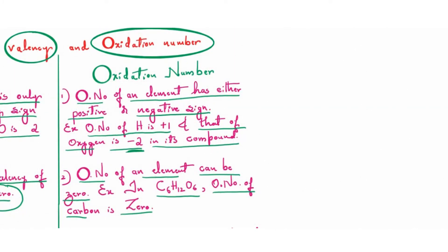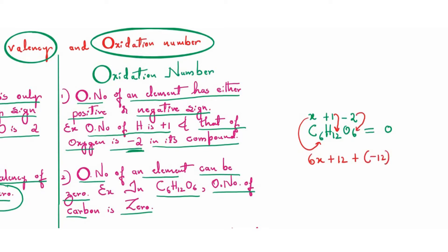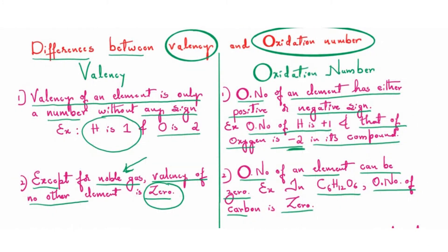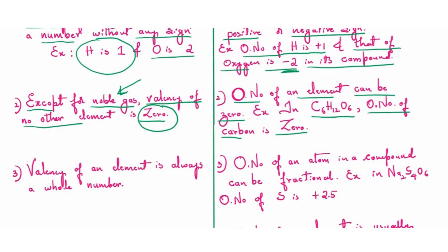I will write C₆H₁₂O₆ equated to zero. We know that oxygen is minus two and hydrogen is plus one. I will calculate carbon as x. So: x×6 gives 6x, plus 1×12 gives +12, and minus 2×6 gives −12, all equal to zero. Now 6x = 12 − 12, so x = 0/6 = 0. Therefore we confirm that oxidation number of an element can be zero.